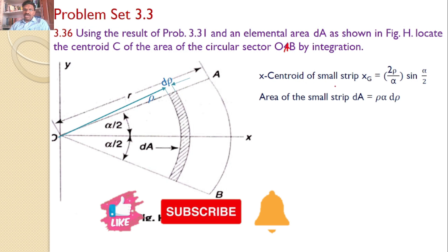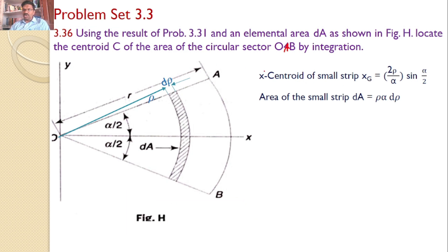The x-centroid of this small strip, x_g, is equal to 2ρ/α · sin(α/2). For that, you can refer to problem 3.31 — the link will be given in the description.